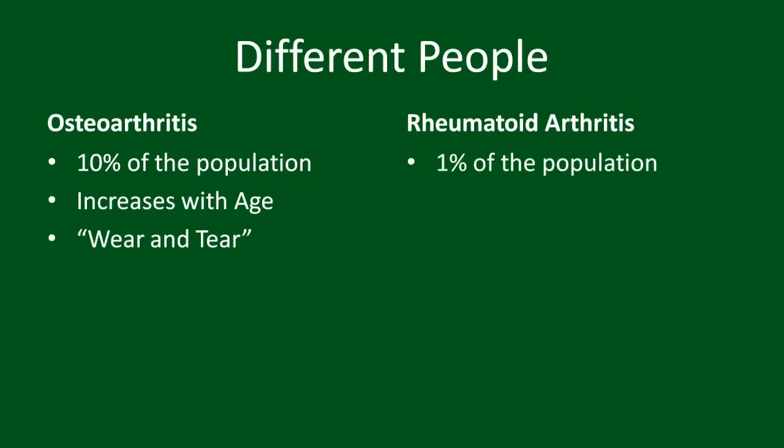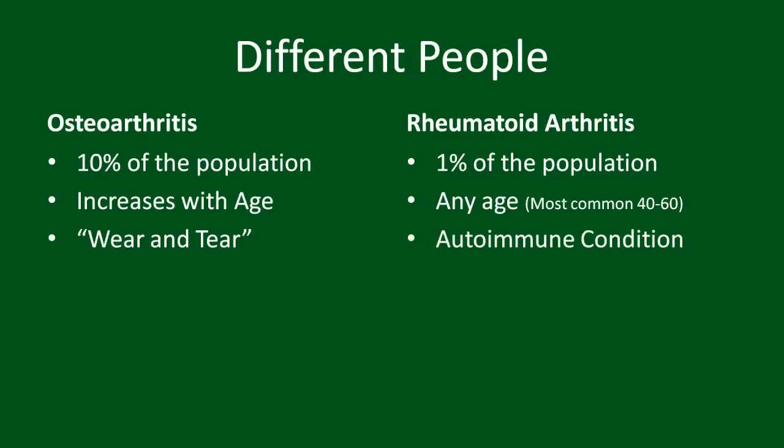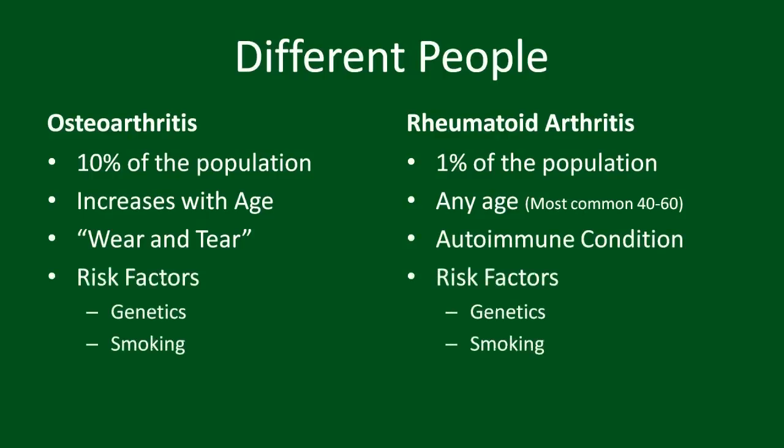Rheumatoid arthritis, caused at least in part by the body's immune system, only affects 1% of the population and occurs at any age. Genetics and smoking can increase your risk of developing either form of arthritis.